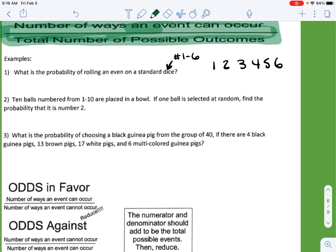If we want to know the probability of rolling an even number, I just highlight my even numbers. I know there are 3 even out of 6 total sides, and then I can reduce that to 1 half.